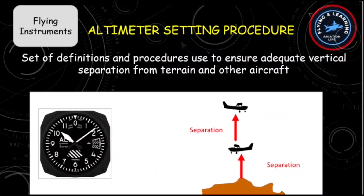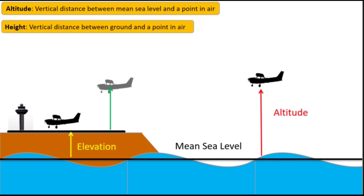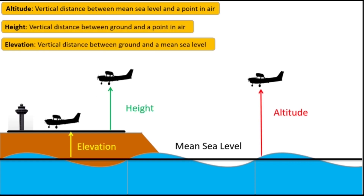Altimetry, or altimeter setting procedure, involves a set of definitions and procedures used to ensure adequate vertical separation from terrain and other aircraft, depending upon different altimeter settings. Before we go into detail, let's revise some basic definitions. Altitude is the vertical distance between mean sea level and a point in air. If we measure the vertical distance between an aircraft and the ground, it is called height.